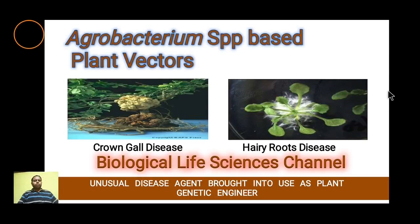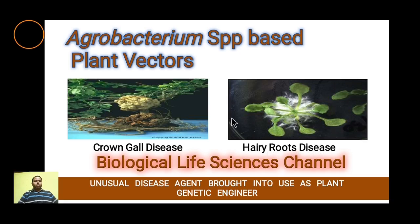Hello friends, welcome to the Biological Life Sciences 10. Today we are going to discuss Agrobacterium species-based plant vectors. The Agrobacterium genus has two pathogenic bacteria: Agrobacterium tumefaciens, which causes crown gall disease, and Agrobacterium rhizogenes, which causes hairy root disease. We are going to see both these vectors and how these bacteria are used as plant vectors.